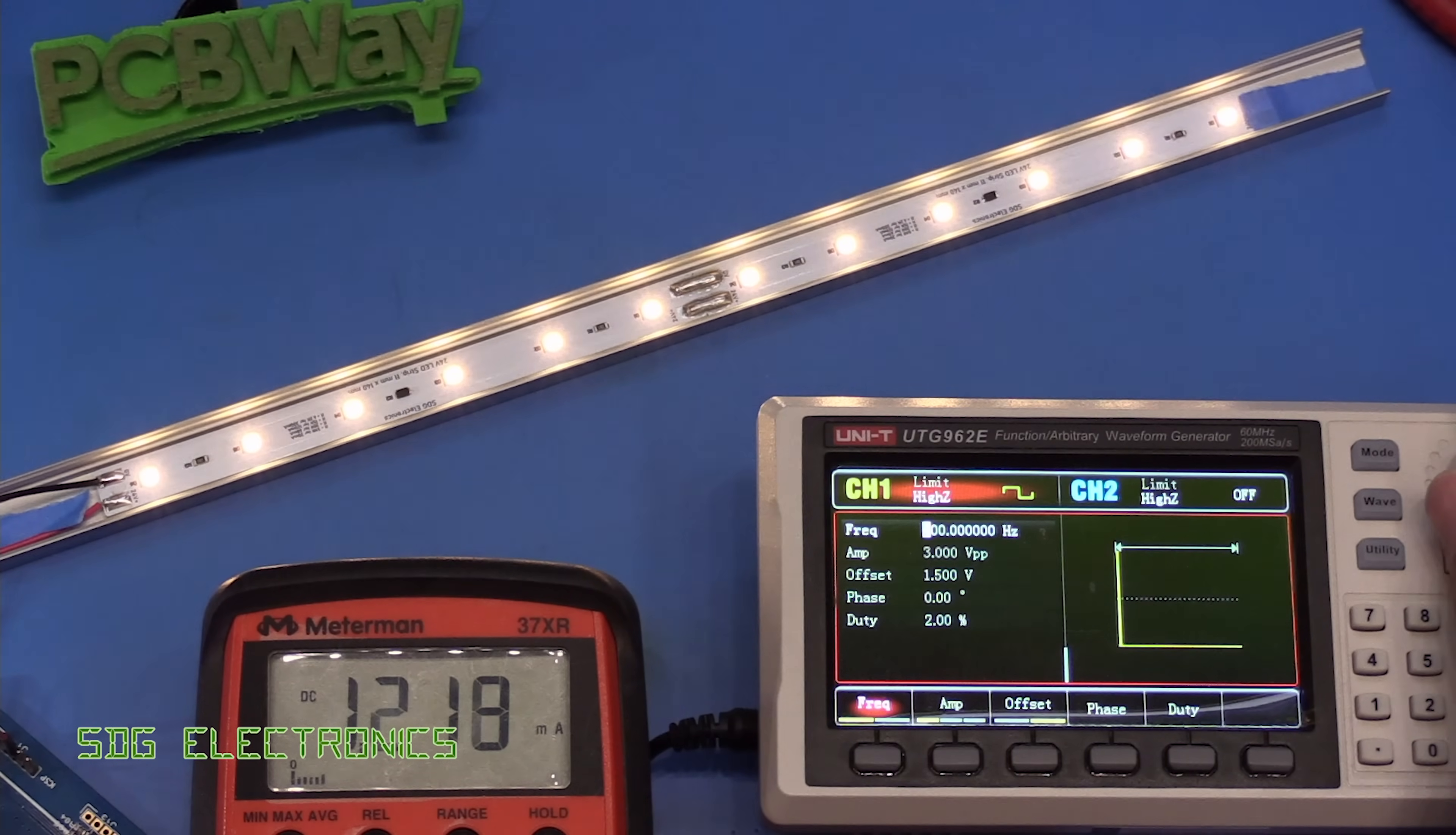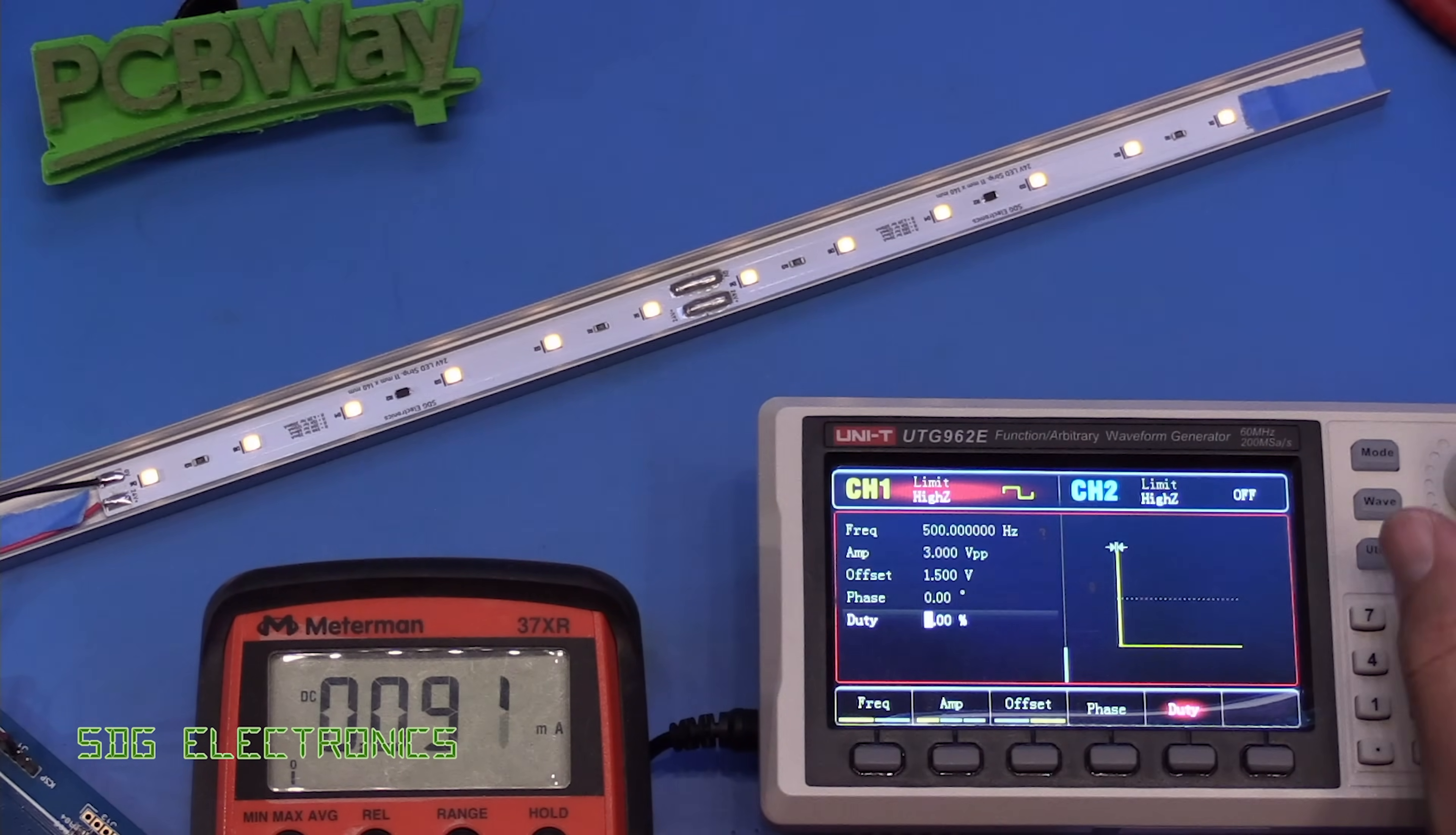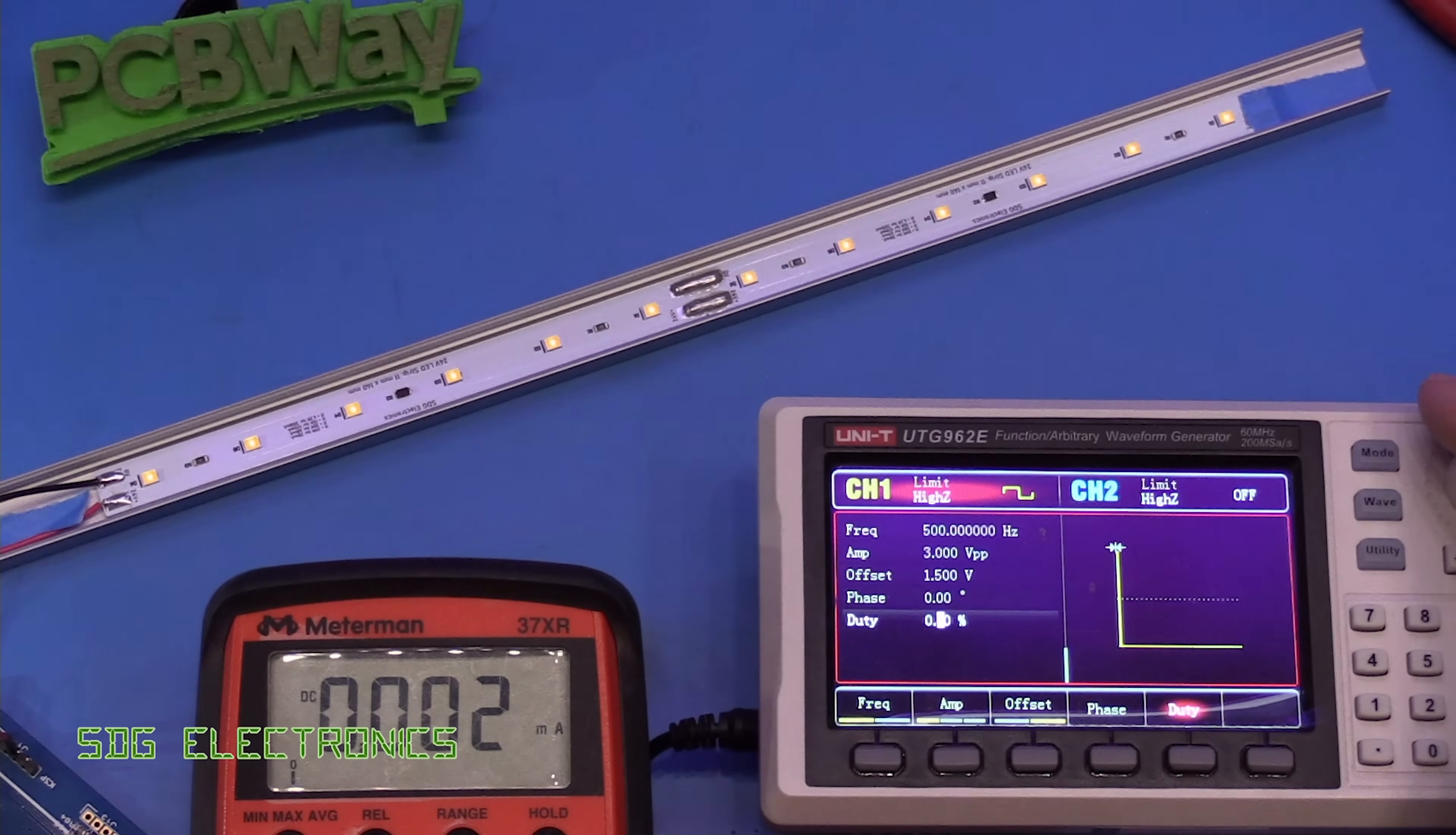so the LEDs are still on and we can decrease the duty cycle further and the LEDs pretty much turn off at about well less than 0.1 percent so we're fine in terms of control of the LED it's just non-linear